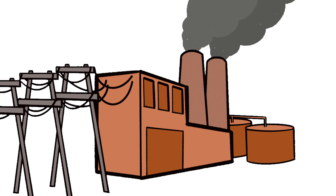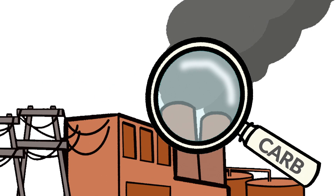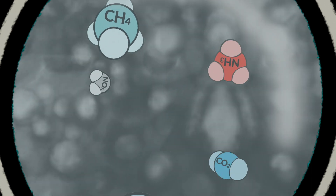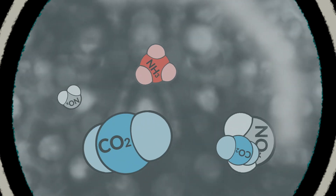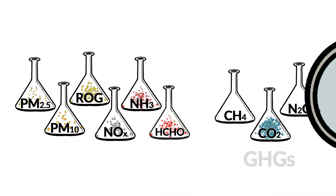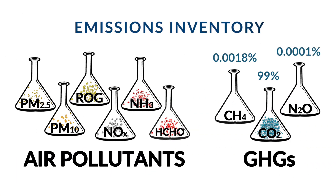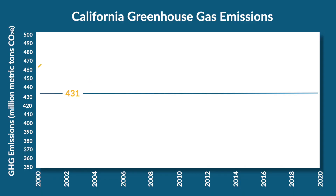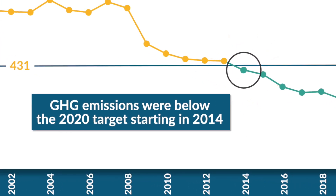CARB is responsible for developing California's greenhouse gas emissions inventory and its inventory of air pollutants. Many sources emit air pollutants and greenhouse gases into the atmosphere. The collection of these sources and their associated emissions is called an emissions inventory. Emissions inventories are most often used to plan and develop emissions reduction strategies. They also help prioritize our work and track progress on meeting California's air quality and greenhouse gas emissions reduction goals.